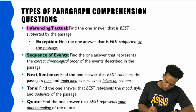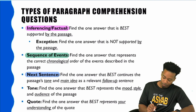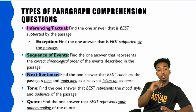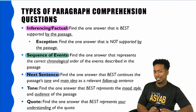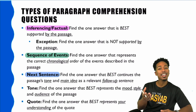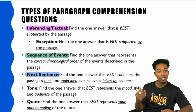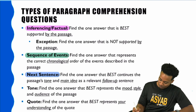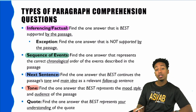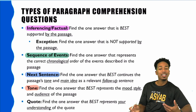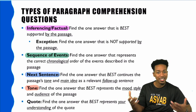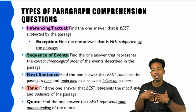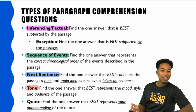Next sentence questions are arguably some of the most annoying types. You're given a passage but without the last sentence, and it's up to you to pick the answer that best fits as the next sentence. Then we have tone questions, which have you identify what the mood, style, and vibe of the text is — how is the information being presented?